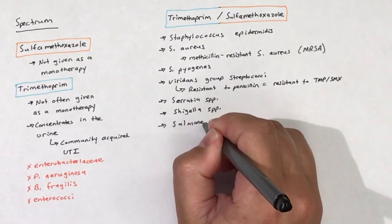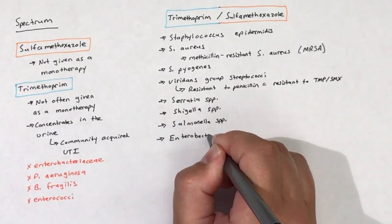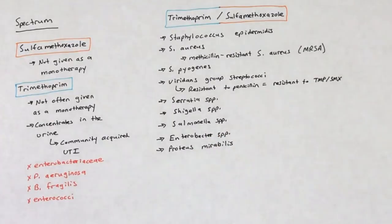TMP-SMX is active against Serratia species, Shigella species, Salmonella species, Enterobacter species, and Proteus mirabilis.